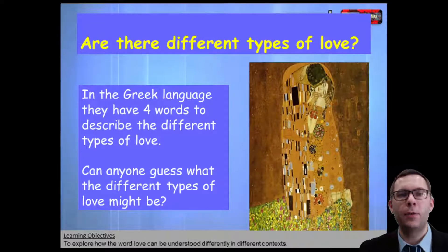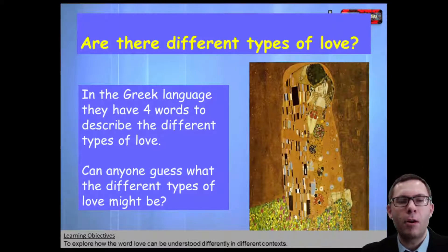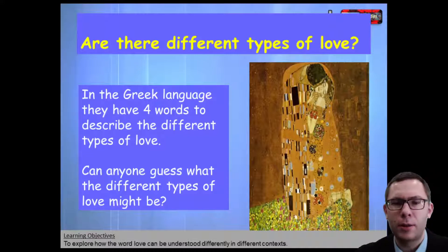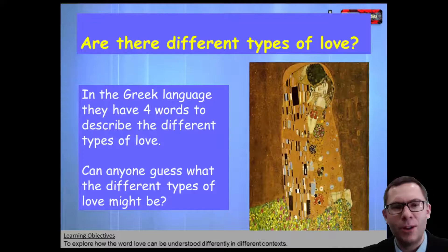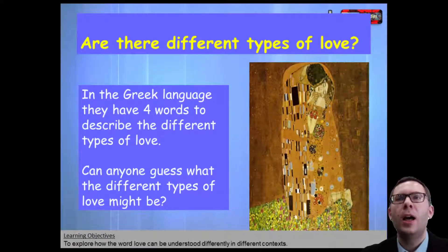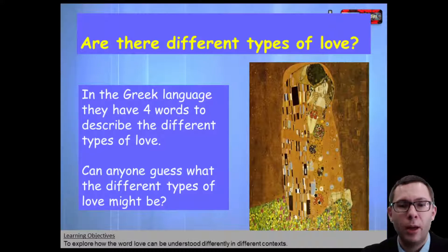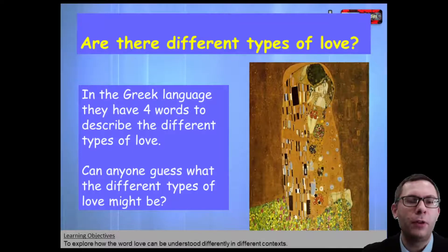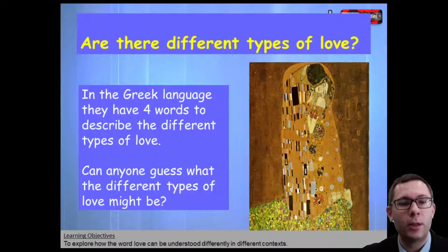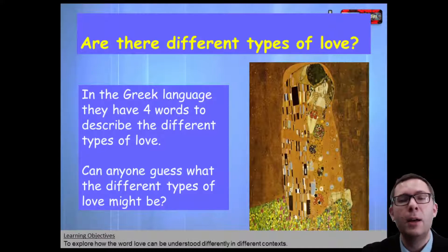So we're going to think about the different types of love that there are. In Greek, there are four different words that describe the type of love. It's like going and speaking to the Eskimo — they have hundreds of words for the word snow, whereas we Brits generally just have one word for snow. And we Brits only have one word for the word love, which is possibly not helpful either. Whereas in Greece, they have four words for the word love. So my question is, does anyone know what the different types of love are? Not the Greek words — I don't expect you to know Greek, but that would be cool if you do.